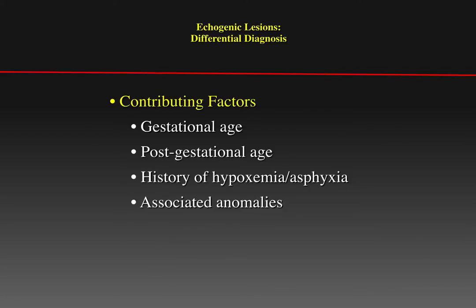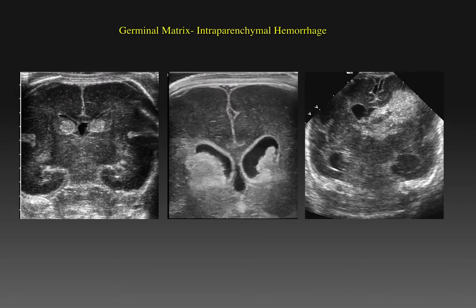one can usually narrow the differential diagnosis somewhat by knowing the gestational age, how old the child is post-gestationally, knowing both the history and type of hypoxemia or asphyxia, and the presence of associated anomalies. These three infants show the typical pattern of premature hemorrhage extending from germinal matrix through intraventricular and intraparenchymal. These hemorrhages are typically brightly echogenic initially and gradually become liquefied and less echogenic over time.